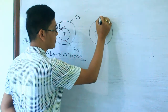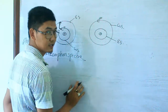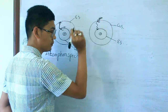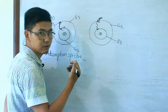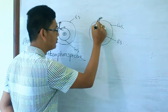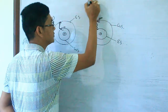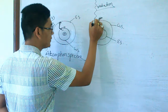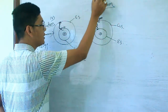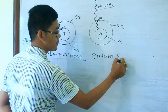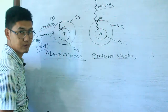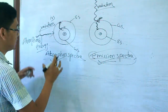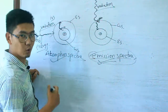We have the electron in the ground state and the excited state. Now, from the higher energy level, the electron drops to the lower energy level. The higher energy level releases energy in the form of radiation — this is the emission spectrum. So, we have two types of spectra: absorption spectra and emission spectra. When an electron jumps from one orbit to another orbit, at that time only atomic spectra are produced.